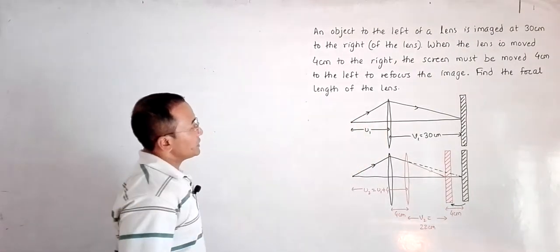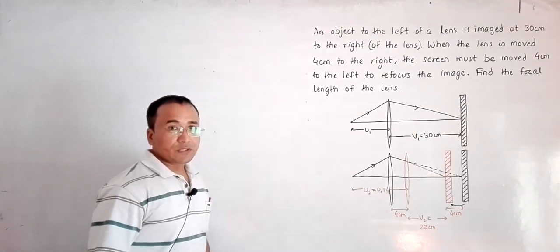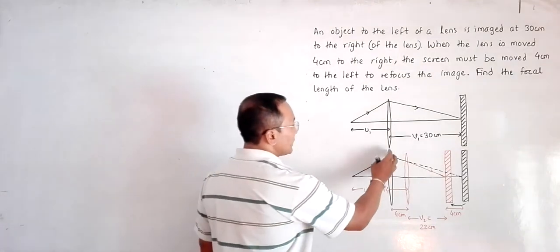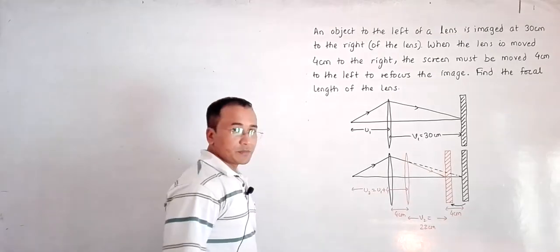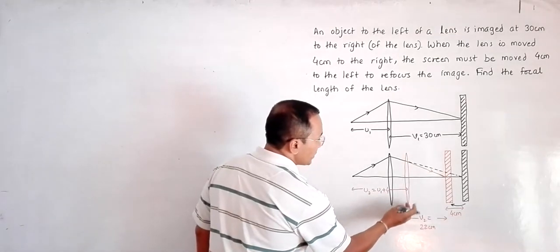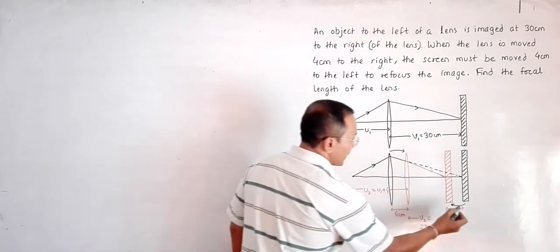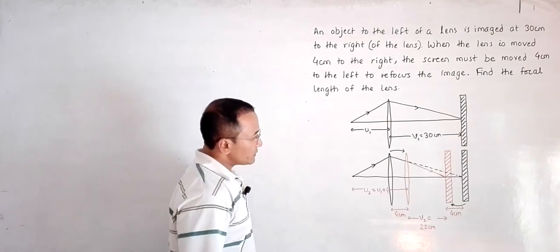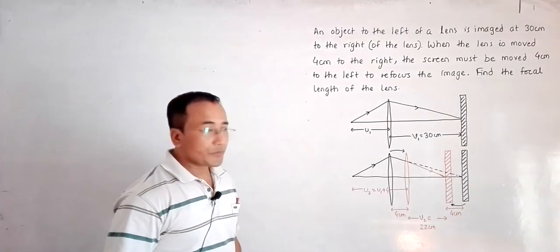We need to refocus the image and find the focal length of the lens. This diagram shows the events: initially the lens is here and the screen is here, with the image distance at 30 centimeters. Then the lens is shifted 4 centimeters to the right, and the screen has to be shifted 4 centimeters to the left. For the second position, the object distance and image distance are different.